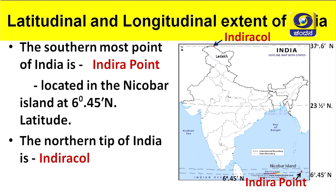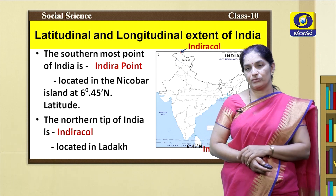The northern tip of India is Indira Col. You have to learn to locate both the southern tip and the northern tip of India. The southern tip is Indira Point, located in the Nicobar Islands. The northern tip is Indira Col, located at 37 degrees 6 minutes north latitude. It is located in Ladakh. While the printing of the textbook, Jammu and Kashmir was given the status of a state, but now it is divided into two union territories — Ladakh and Jammu and Kashmir — so now Indira Col is situated in Ladakh.